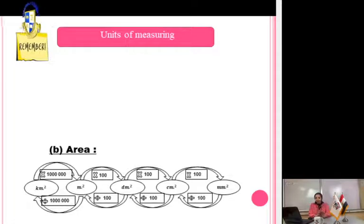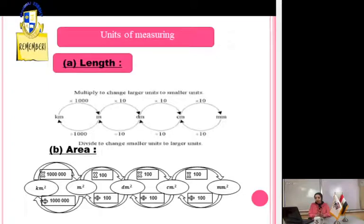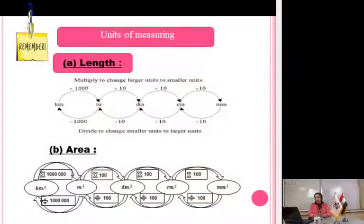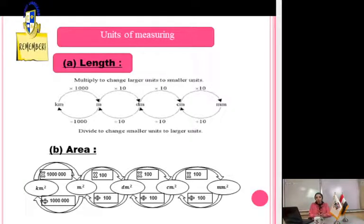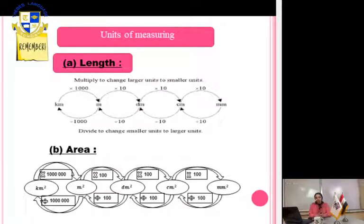Remember the units of measurement. For length: kilometer, meter, decimeter, centimeter, and millimeter. To convert from a bigger unit to a smaller unit, multiply. To convert from a smaller unit to a bigger unit, divide. From kilometer to meter: times 1000. From meter to decimeter: times 10. From decimeter to centimeter: times 10. From centimeter to millimeter: times 10.